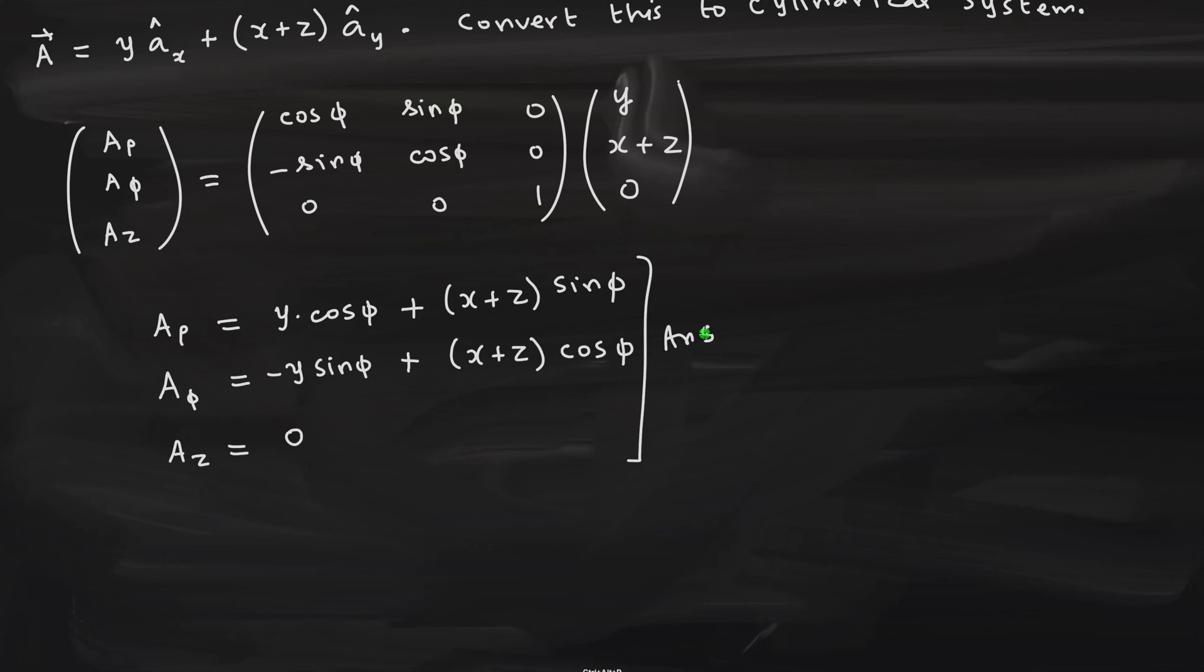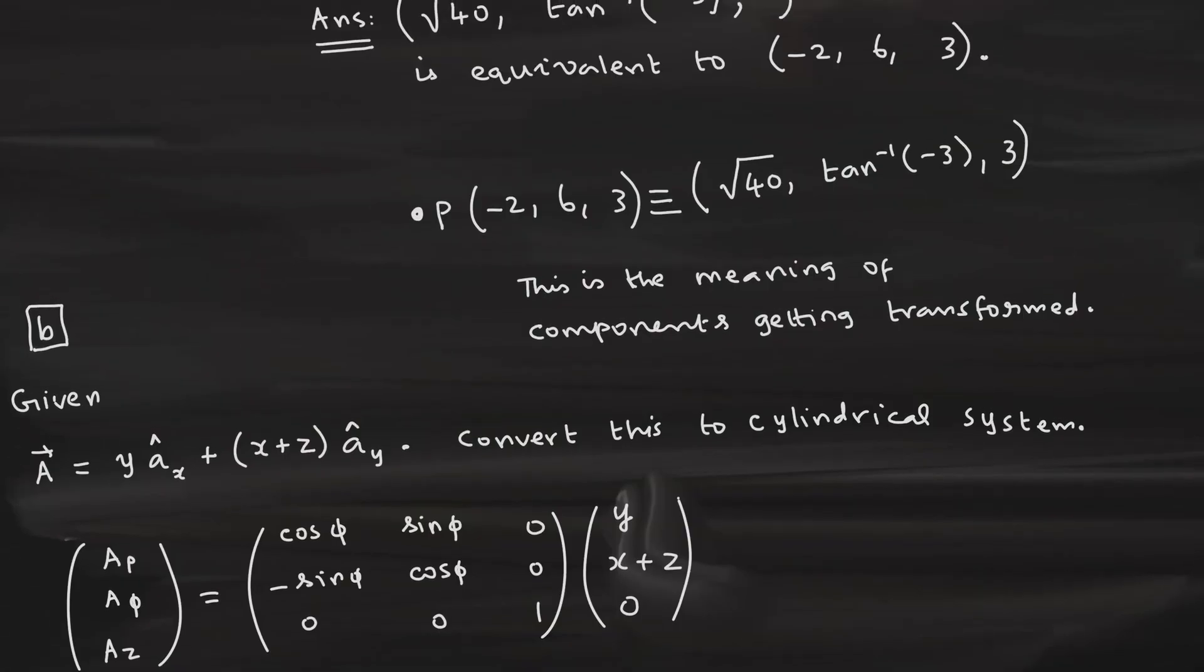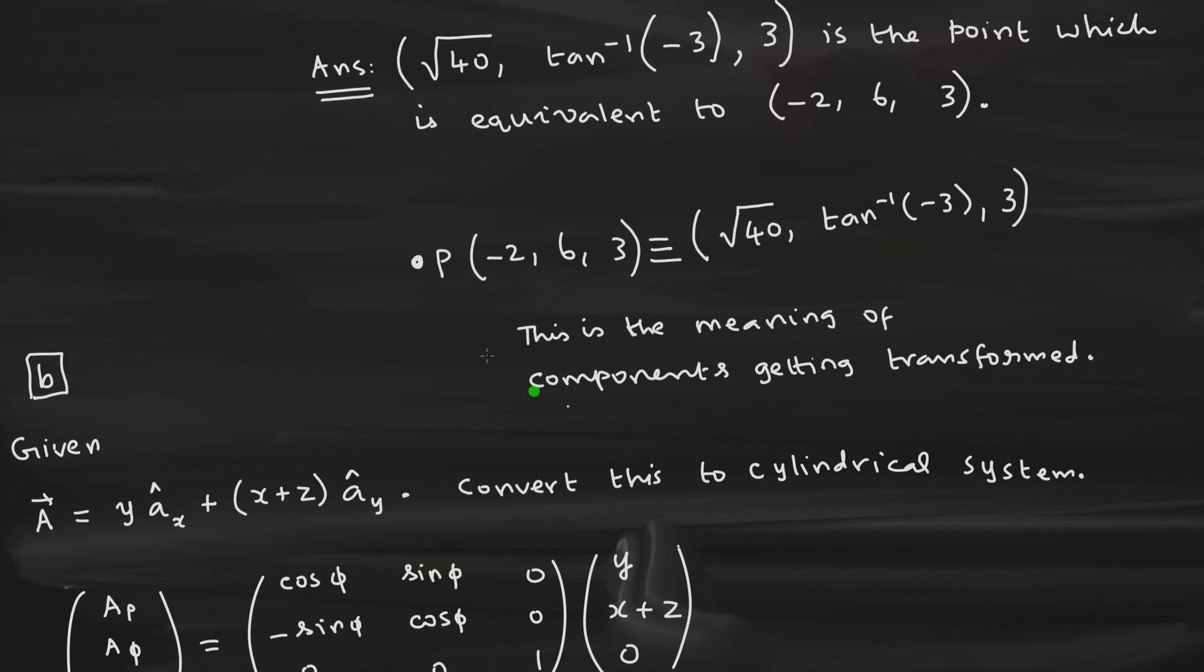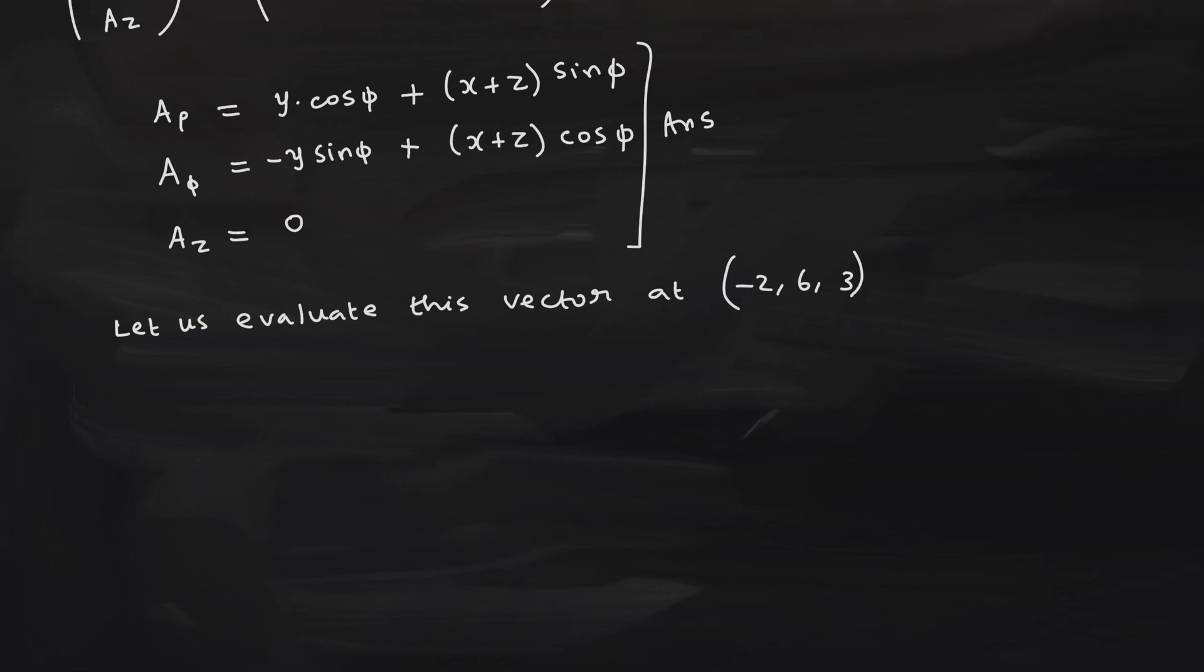But however, if you want to perform one more step, namely, the evaluation at the point, then you have to do an additional work. So, let us evaluate this vector at the point. What point you have already shown here. Let me go back and see. At the point, here it is there. Minus 2, 6, 3. What is the meaning of evaluating this vector at? You may get a doubt. Why we are doing? Let me show here. Go back here.